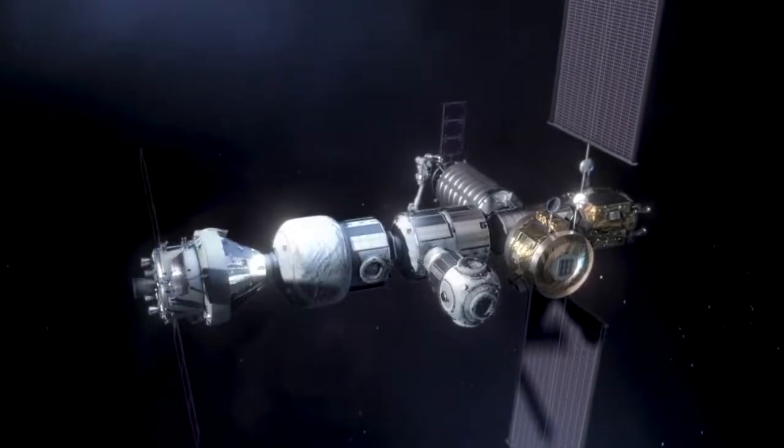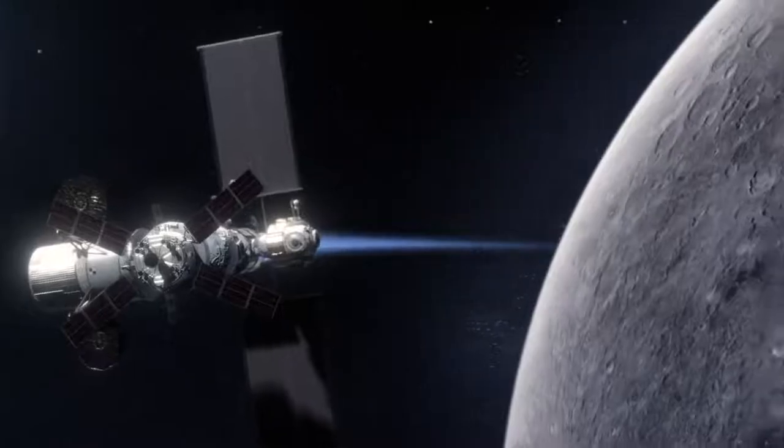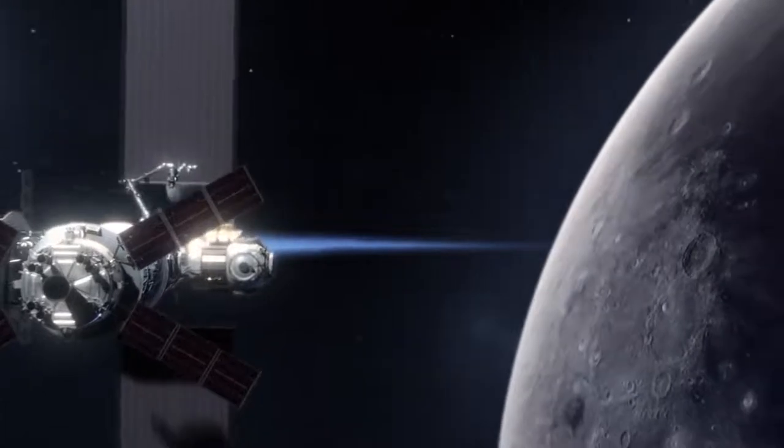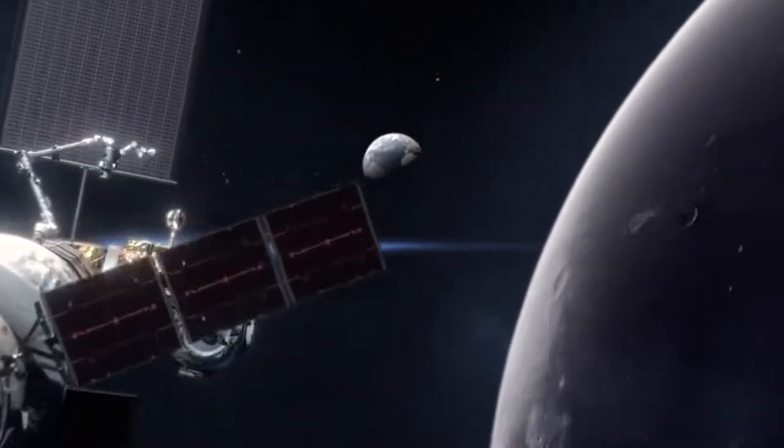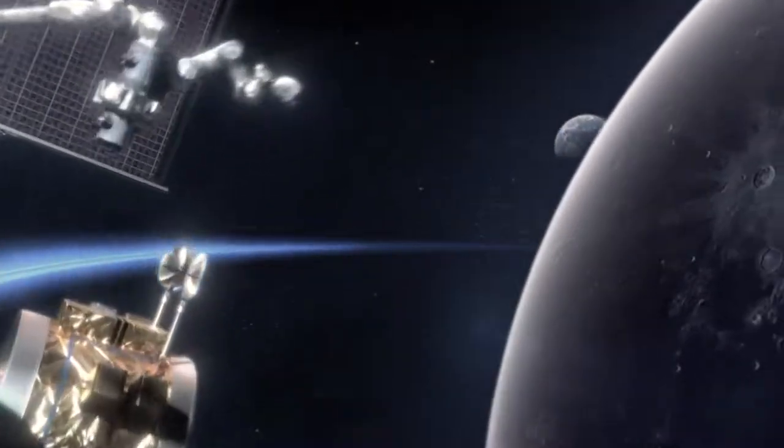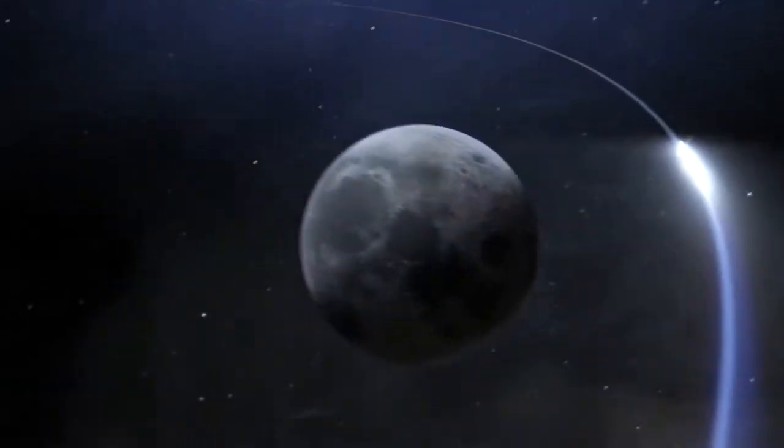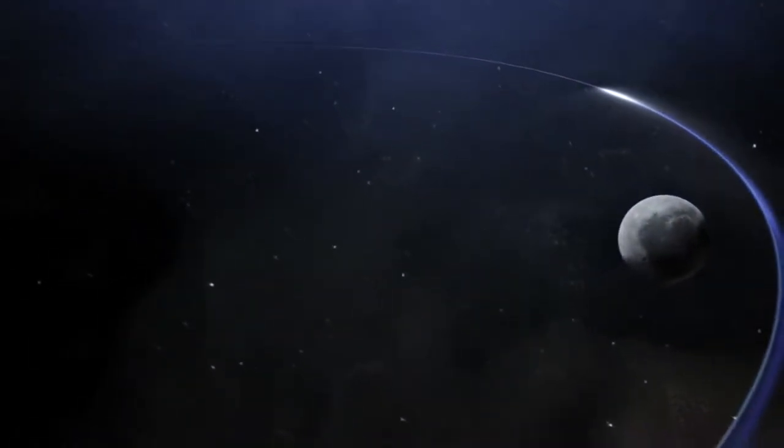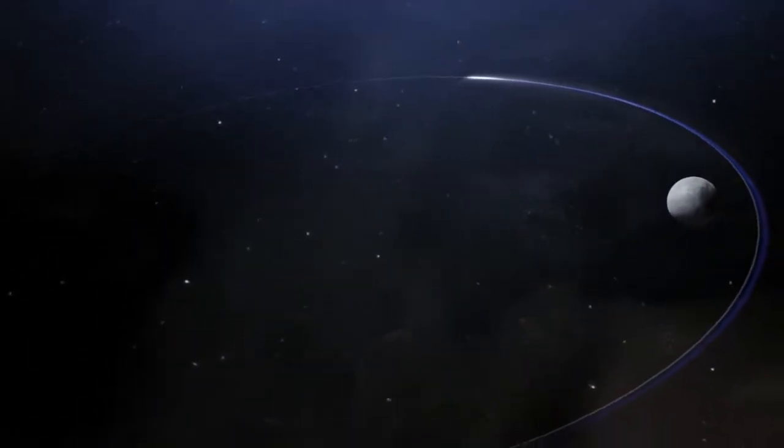This orbit will be home for NASA's Gateway, the future space outpost that will support visiting astronauts on their way to the Moon and beyond. To help prepare for Gateway operations in this orbit, Capstone will fly the path first.